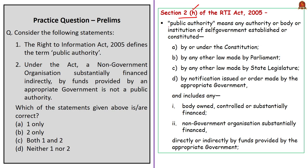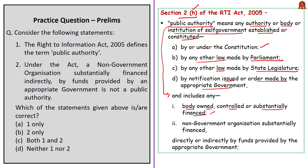Section 2(h) defines the term 'public authority.' As per this act, a public authority means any authority, body, or institution of self-government established or constituted by the Constitution, under the Constitution, by any law made by Parliament, by any law made by a state legislature, or by notification or order made by the appropriate government. The term also includes any body owned or controlled by the appropriate government, or substantially financed by funds provided by the appropriate government, and even non-government organizations substantially financed either directly or indirectly by funds provided by the appropriate government. The preamble of the RTI Act states that the act provides for the right to information for citizens to secure access to information under the control of public authorities in order to promote transparency and accountability.